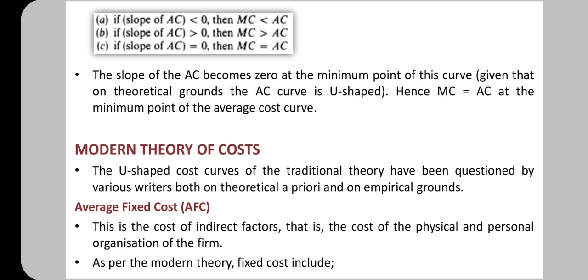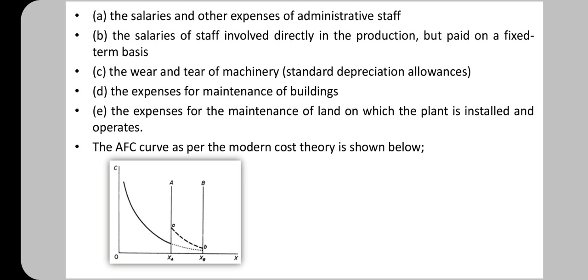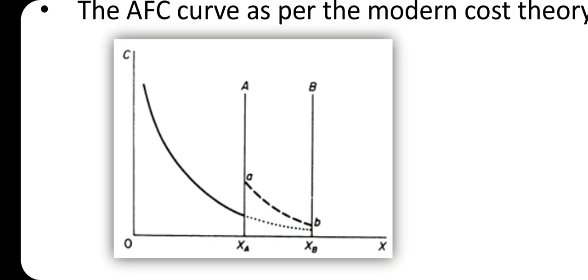In modern theory, fixed costs include the salaries and other expenses of administrative staff, the salaries of staff involved directly in production but paid on a fixed-term basis, wear and tear of machinery, standard depreciation allowances, expenses for maintenance of buildings, and expenses for maintenance of land on which the plant is installed. Average fixed cost is continuously falling.